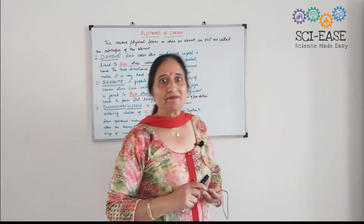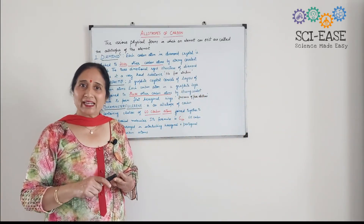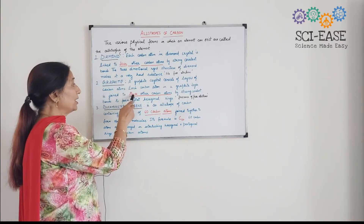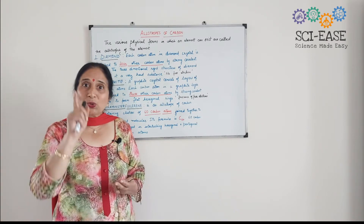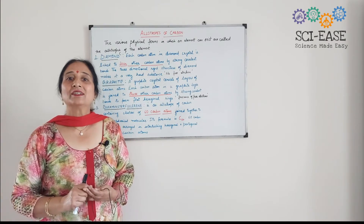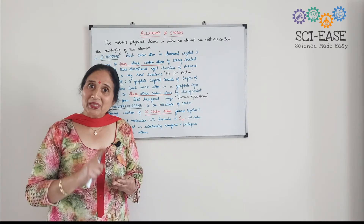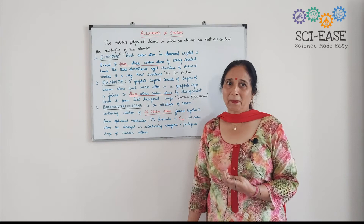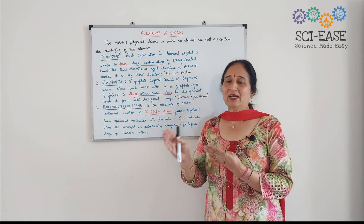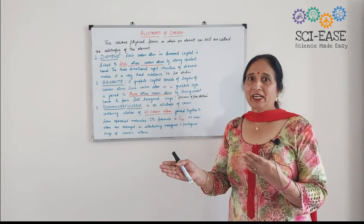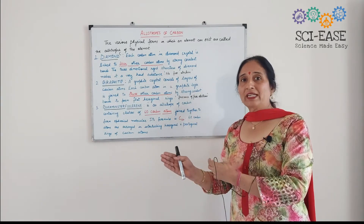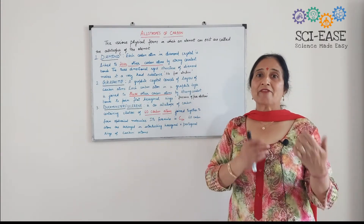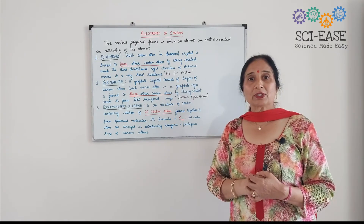Now the next thing is that graphite is a good conductor of electricity. Why? Because each carbon atom is surrounded by three other carbon atoms, so there is a free electron present in case of graphite. Due to this free electron, graphite is a good conductor of electricity. So you can see the difference: diamond is the hardest substance and graphite is soft and slippery; diamond is a bad conductor of electricity and graphite is a good conductor of electricity.